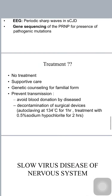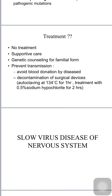There is no specific treatment, but supportive care can be given and genetic counseling for familial forms. Prevention includes avoiding blood donation by the diseased and properly decontaminating surgical devices — autoclave at 134 degrees centigrade for one hour (compared to normal autoclaving at 121 degrees centigrade for 20 minutes), and treatment with sodium hypochlorite for two hours will kill the prion.